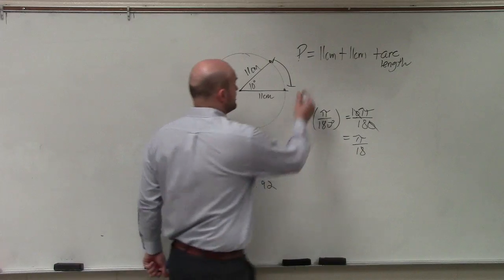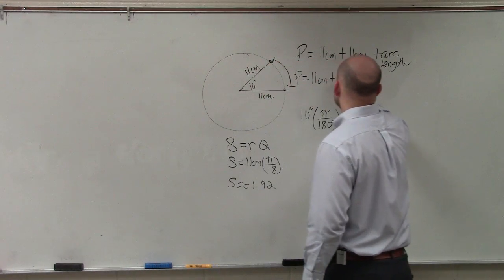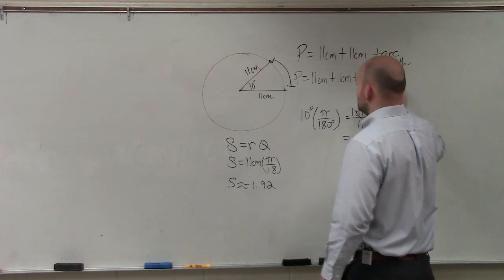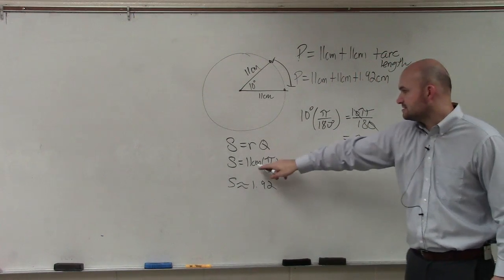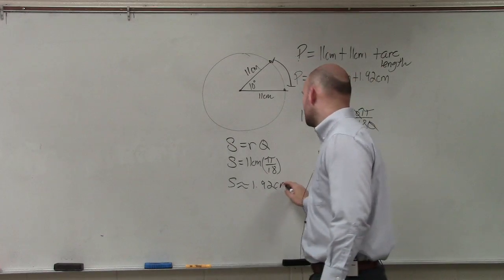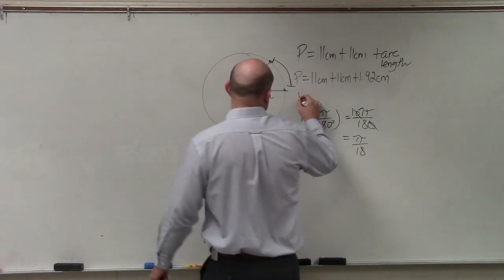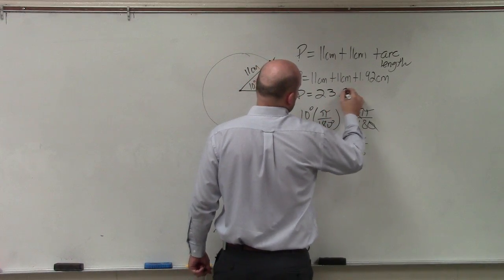So then, to find my answer here, perimeter equals 11 centimeters plus 11 centimeters plus 1.92 centimeters, because I forgot to mention that is centimeters there. So therefore, that's going to be 22 plus 1.9, so the perimeter equals 23.92 centimeters.